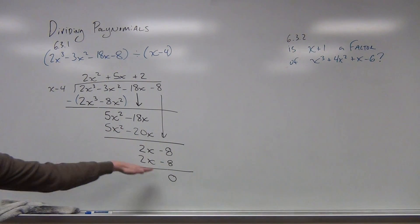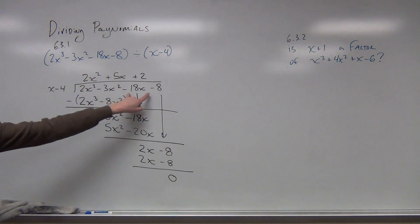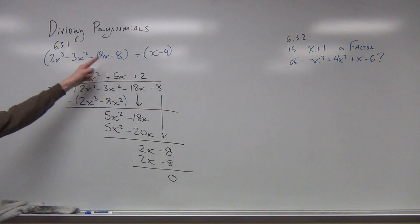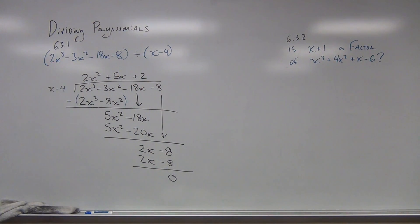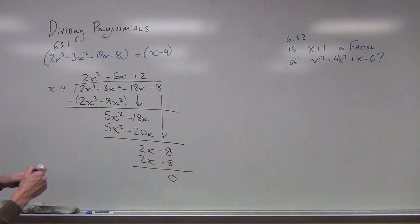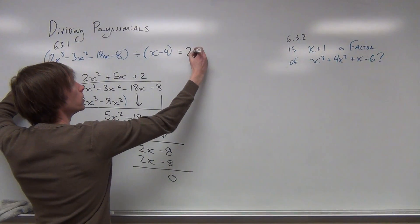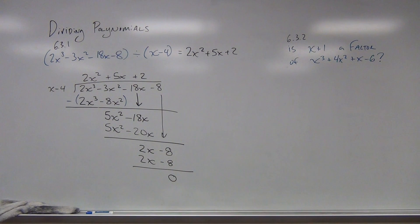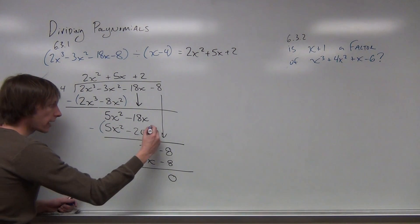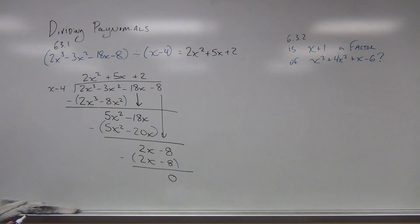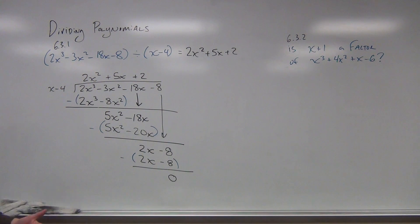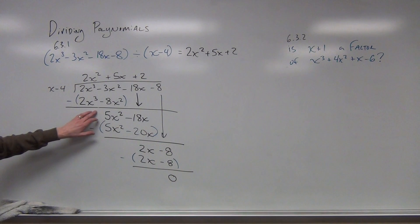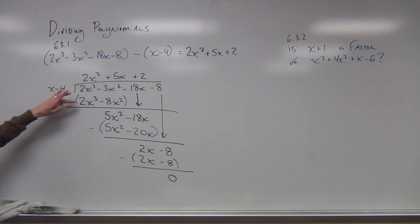That means I have no remainder. When I do this division — 2x cubed minus 3x squared minus 18x minus 8 divided by x minus 4 — I get a polynomial with no remainder. That means this divides perfectly. The key here is knowing that you are subtracting each time. The most common mistake you're going to make is not subtracting your negatives correctly — that's going to be your most common mistake. Does it happen to me? Sure, from time to time.